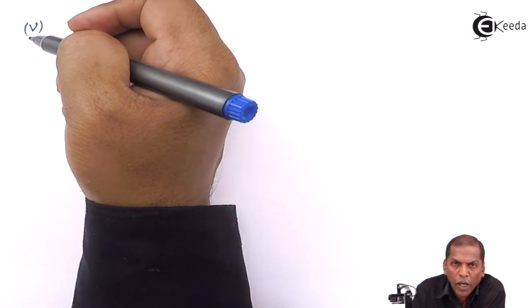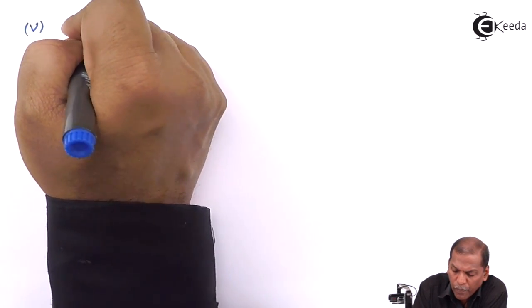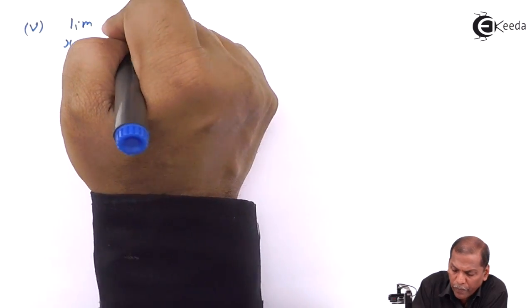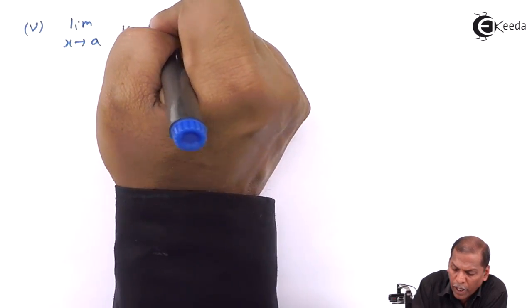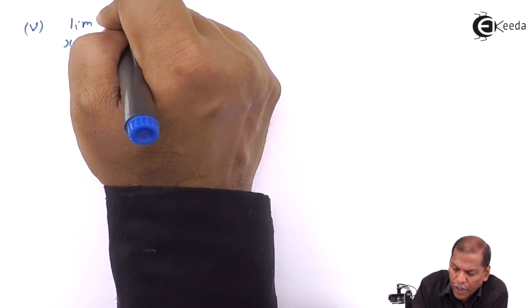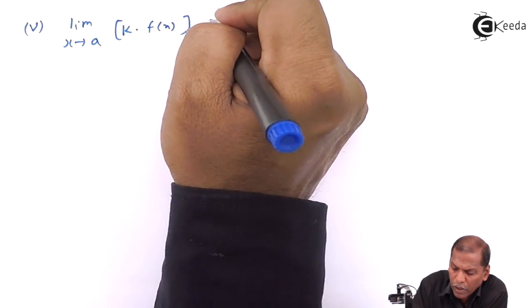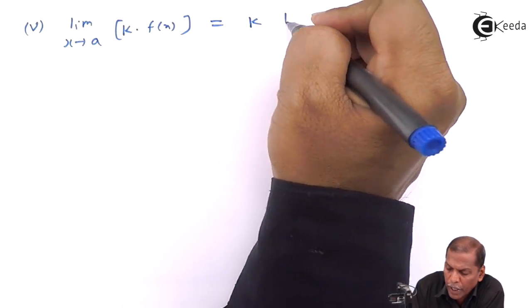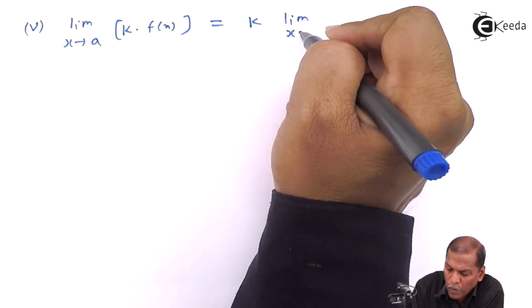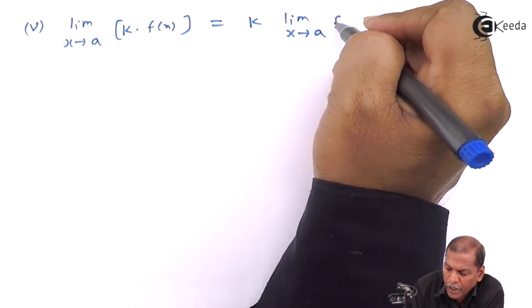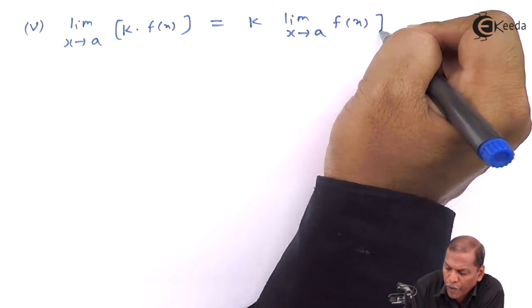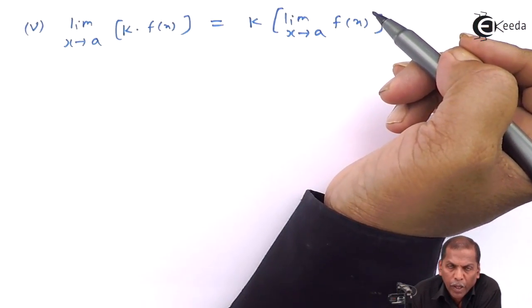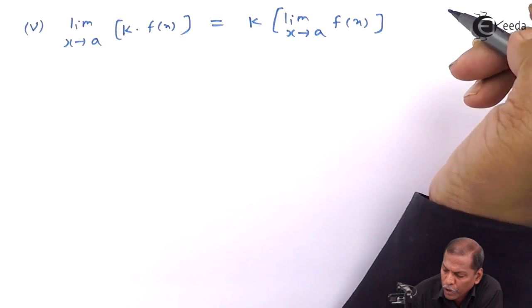Formula number five: limit x tends to a of k times f(x) is equal to k times limit x tends to a of f(x), where k represents a constant.